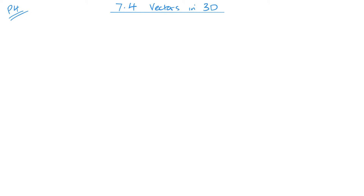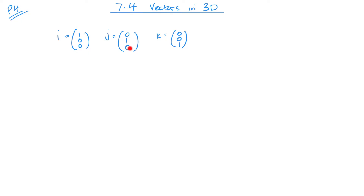You've already seen I and J. I was one unit along the horizontal, J was one unit along the Y axis. And now we have K, which is one unit along the Z axis. So we've added that third direction, that third dimension, into our vectors.